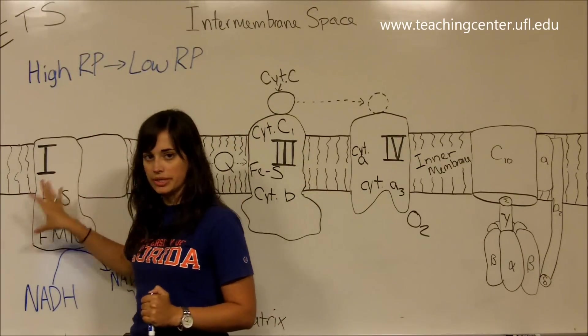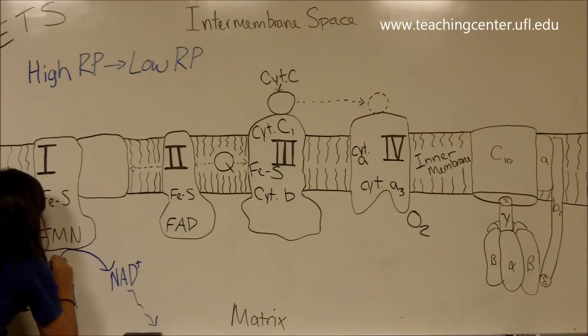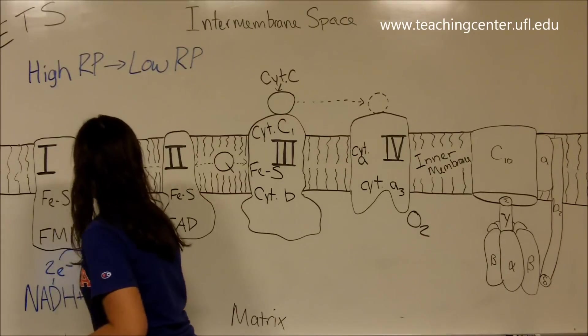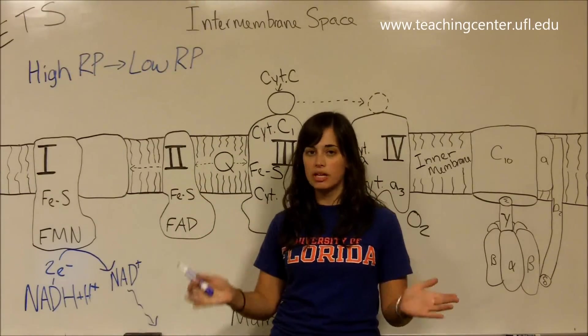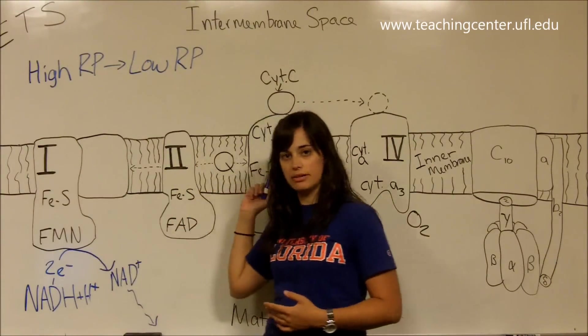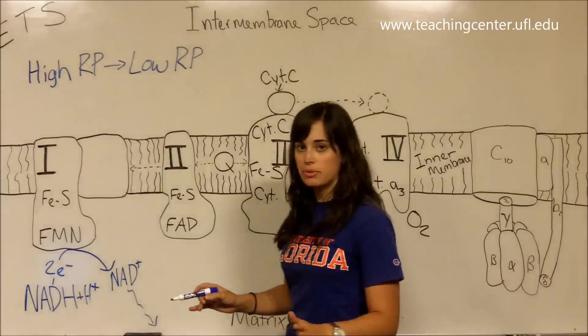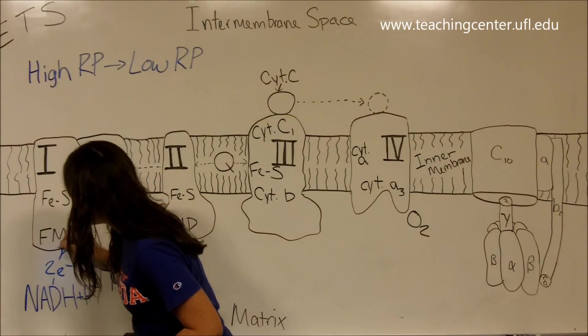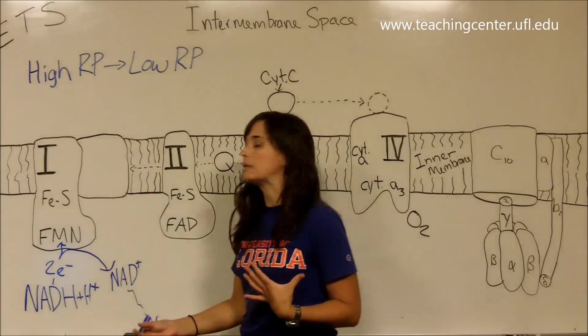Whereas FMN just has the isoalloxazine ring and ribitol. But what you need to know, NADH gives its electrons to FMN. And of course, what we're left with is NAD+ which just sort of floats away. FMN is actually part of complex one here. So it gets two electrons. These two electrons, there's another proton included in here, but these two electrons are what we're going to be following through this chain today. With every NADH you use, you get two electrons. So that's what we're working with. Two electrons, one NADH.